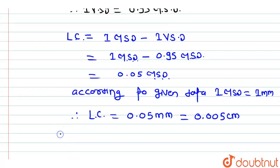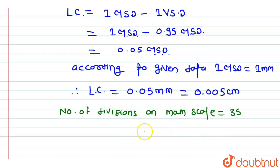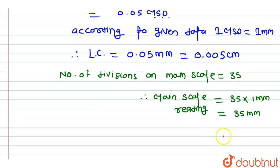The number of divisions on the main scale is 35. Therefore, the main scale reading = 35 × 1 mm = 35 mm = 3.5 cm.